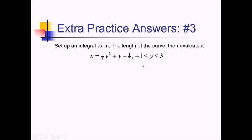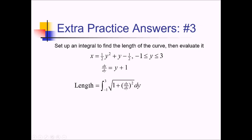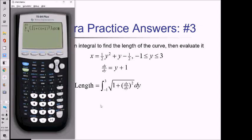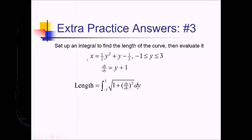On this one, I'm trying to set up an integral and evaluate it to find the length of this curve. So let me find my derivative — this is dx over dy, since we're taking the derivative of x with respect to y. Using the power rule, that's going to be y plus 1. So now I take the integral from negative 1 to 3 of the square root of 1 plus dx over dy squared, dy. Plugging this into the calculator — using x everywhere instead of y as the dummy variable — pressing enter gives about 9.294.